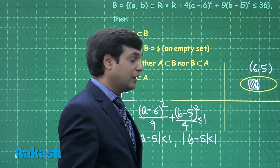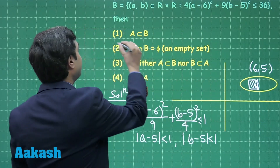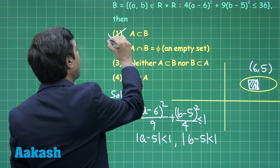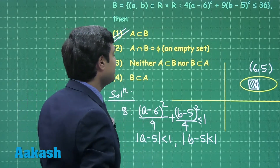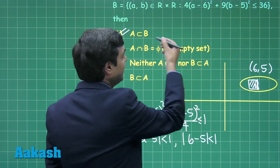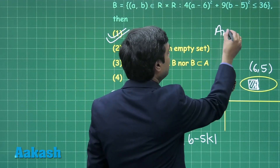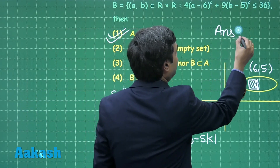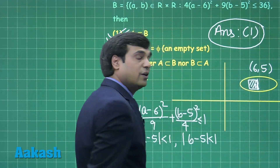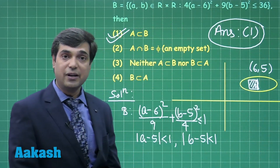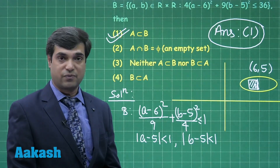We can clearly see that the entire region of set A is lying inside the ellipse representing set B. From the given options the correct answer is option number 1, that is A is a proper subset of B. This point is clear, let us move to the next question.